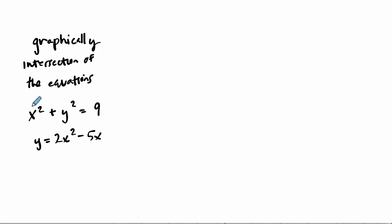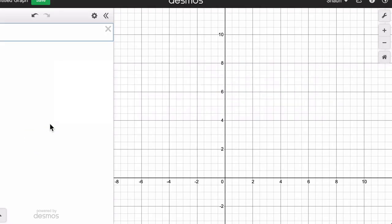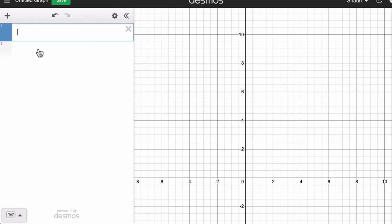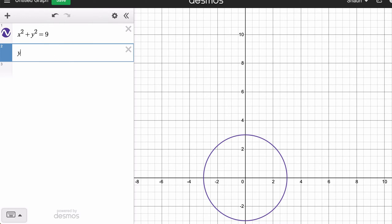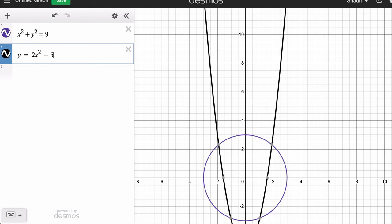What we could do to figure out where does this system have a solution? This is a system, right? A collection of equations. We could graph them, and we can do it quickly on Desmos, or we could plug in some inputs and outputs. But let's just do it quickly on Desmos so you can see x squared plus y squared equals 9. There's our circle. Then we have a parabola, y equals 2x squared minus 5x.